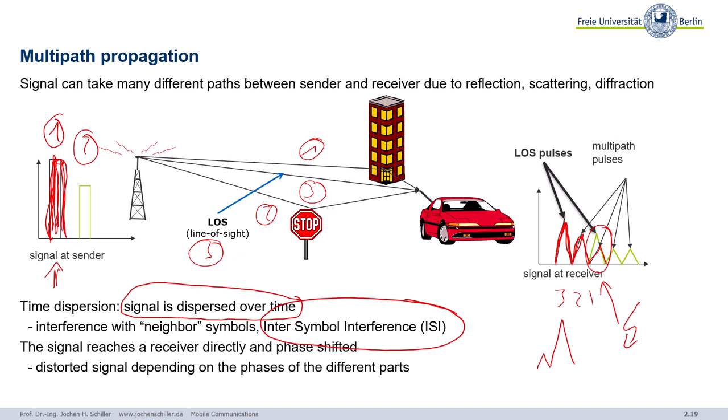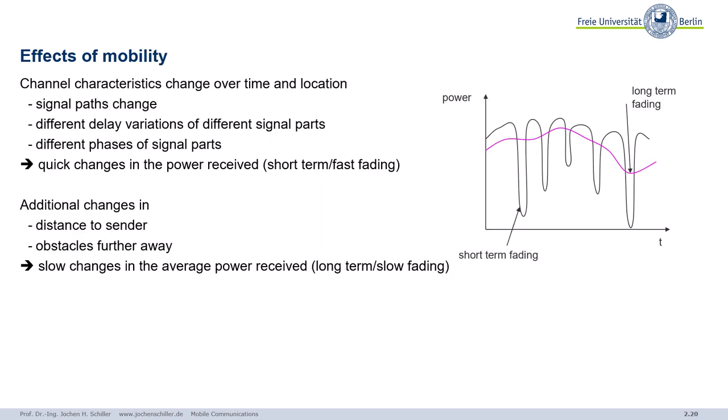So multipath propagation causes inter-symbol interference. How much interference? Well, this depends on where the multipaths are. So multipath propagation, that's a problem. It's also a chance we will see. Receivers that can use multipath propagations with different antennas and then add the different phases in a constructive way, for example.